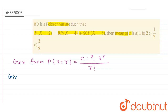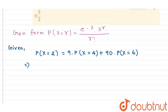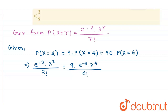So we write down the given condition: P(X=2) = 9·P(X=4) + 90·P(X=6). Substituting the Poisson formula, we get e^(−λ)·λ²/2! = 9·e^(−λ)·λ⁴/4! + 90·e^(−λ)·λ⁶/6!.